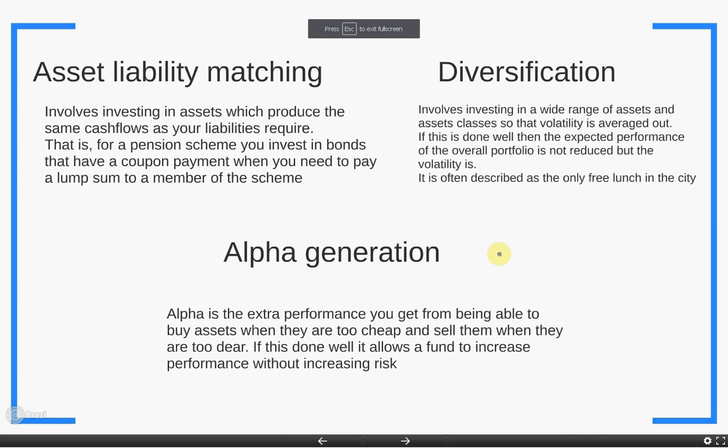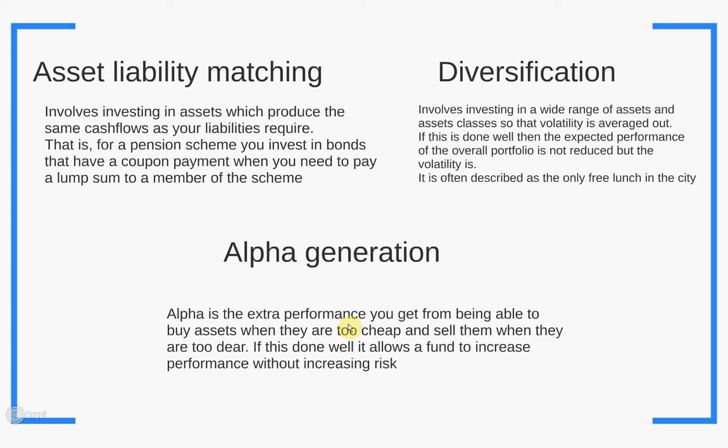Alpha generation is the extra performance you get from buying assets that are cheap and selling them when they're too dear — it's really the whole point of the skill of a fund manager. If you look in the market and see an asset trading at £5, and after looking at the accounts, sales, and R&D pipeline you think it's actually worth £8, if you buy it for £5 and it turns out to be worth £8, you make £3 profit. That profit is pure gain — not a trade-off with risk. That's what you're trying to do in fund management: generate alpha by buying things that are too cheap and selling them for more than they're actually worth.